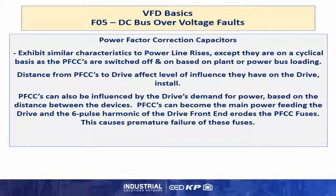Power factor correction capacitors can also cause issues. They exhibit similar characteristics to power line rises, except they are on a cyclical basis as the power factor correction capacitors are switched off and on based on plant or power bus loading. The distance from the power factor correction capacitor to the drive affects the level of influence they have on the drive and the install. The PFCCs can become the main power feeding the drive, and the six-pulse harmonic of the drive front end erodes the PFCC fuses, causing premature failure of these capacitor protection devices.